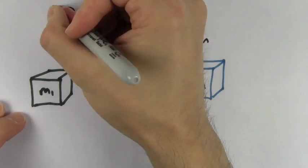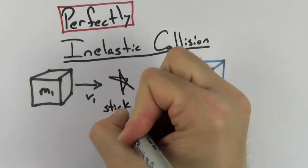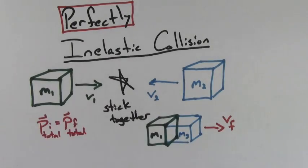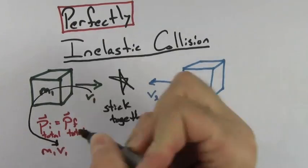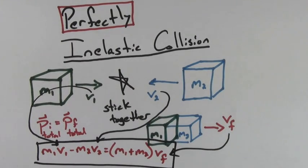The simplest kind of collision to deal with is a perfectly inelastic collision. In a perfectly inelastic collision the objects stick together and move off with a common velocity. Because the objects stick together there's only one term to deal with on the right-hand side of the conservation of momentum P initial equals P final equation.